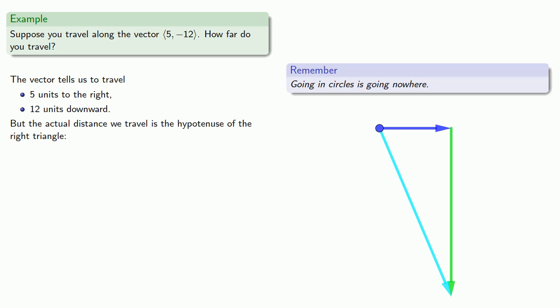And so we can find that hypotenuse, the square of that distance. Well, that's 5 squared plus 12 squared. And so our distance will be... And this will be positive because we want it to be a distance.